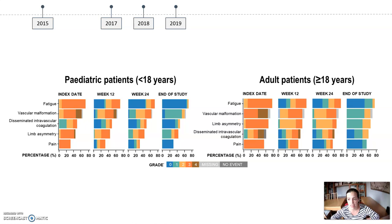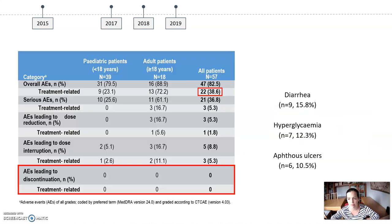However, almost 75% experienced some reduction in the target lesion. Irrespective of the size, all patients presented great improvement in all symptoms. Most patients presented adverse events, although only 38% were considered related to alpelisib. The most frequent were diarrhea, hyperglycemia, and mucositis.